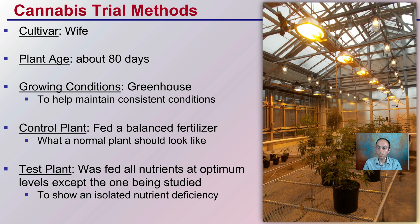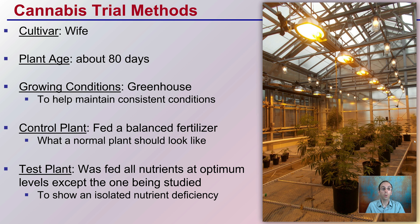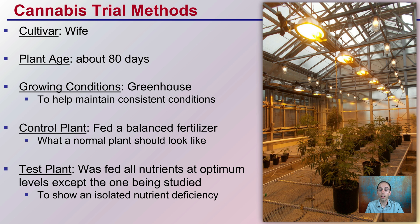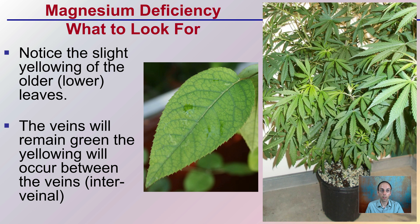A trial was done — a unique thing here with cannabis. The plants are about 80 days old, grown in a greenhouse to help maintain consistent conditions. You're going to see a control plant that was fed a balanced fertilizer, and then a test plant that was fed all the nutrients at optimum levels except the one being studied. In this case, it would be a magnesium-deficient plant.